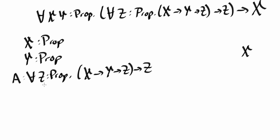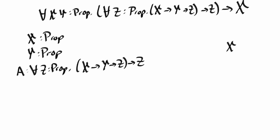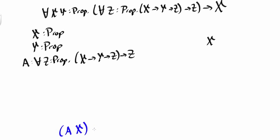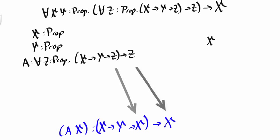So it's not clear that we can apply this a — but in fact we can. The idea is to look at the type of a applied to x. The type of a applied to x is: x implies y implies x implies x. One obtains this type by substituting x for z. Now it's clear that we can apply a x to reduce the claim to proving x implies y implies x.